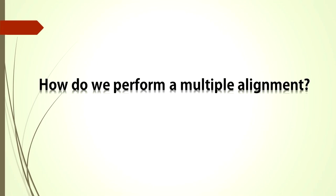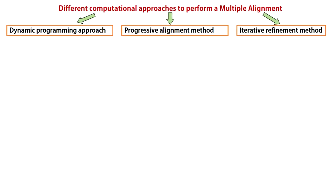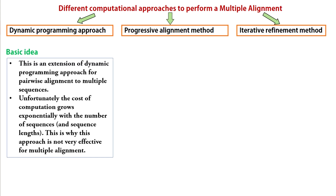How do we perform a multiple alignment? Basically, there are three different methods. The first is the dynamic programming approach. This approach works fine for pairwise alignment, but dealing with multiple alignment using dynamic programming is a whole different ball game. The possibilities are too many and so is the computational cost — it is simply unrealistic, so we do not use this method.